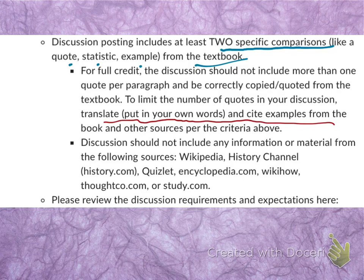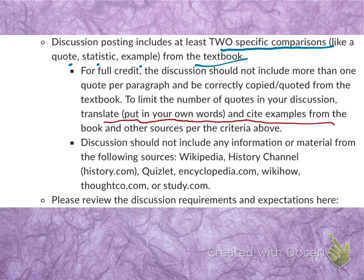Please do not use any of the following sources: Wikipedia, History Channel, History.com, Quizlet, Encyclopedia.com, and similar sites. The main source for the discussions this semester should be the textbook. However, if you do want to use outside sources, you still need at least two direct comparisons and citations from the textbook. You may also want to review the working with historical sources video to review what accurate and legitimate historical sources are.